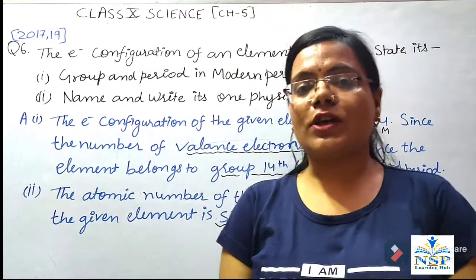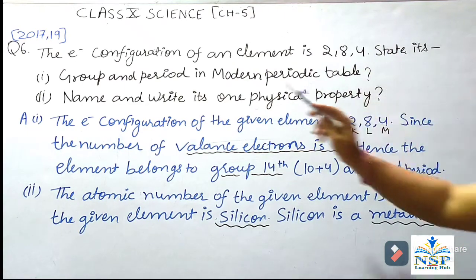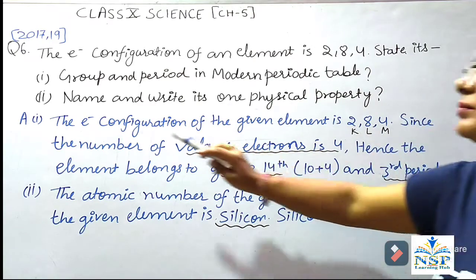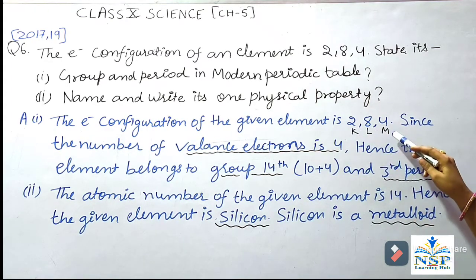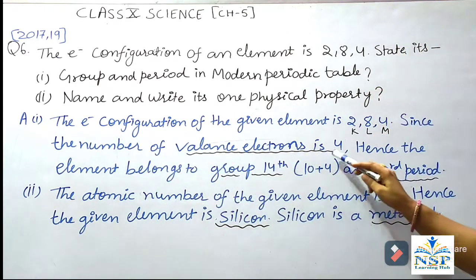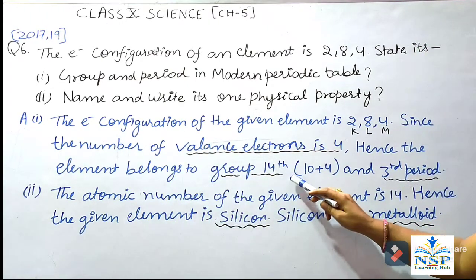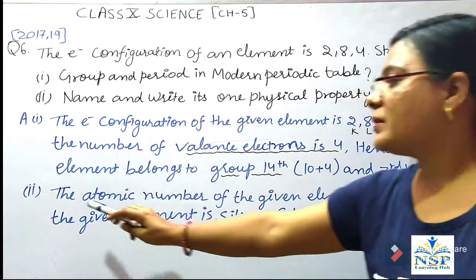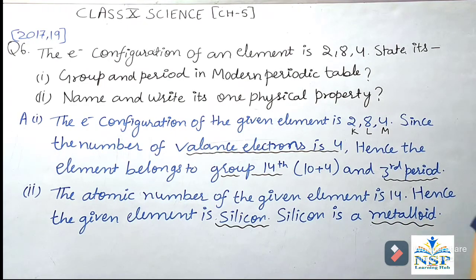Question No. 6: The electronic configuration of an element is 2, 8, 4. State its group and period in the Modern Periodic Table, and name and write one physical property. The electronic configuration is 2, 8, 4, meaning the shells are K, L and M. Since the number of valence electrons is 4 in the outermost shell, the element belongs to Group 14 (10 + 4) and Period 3, because the last electron is in the M shell. The atomic number of the given element is 14, hence the element is silicon. Silicon is a metalloid — it shows the character of both metals and non-metals.